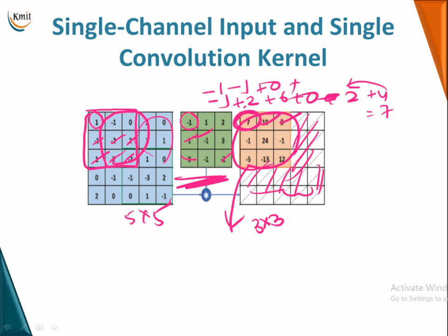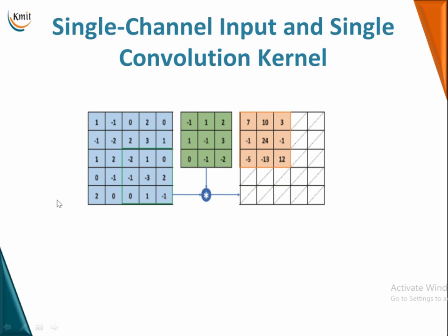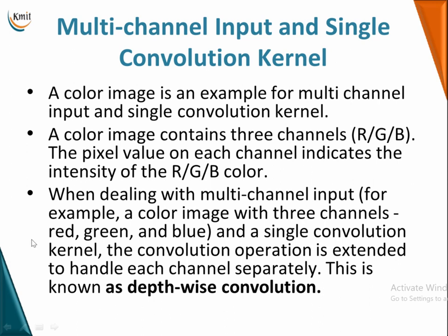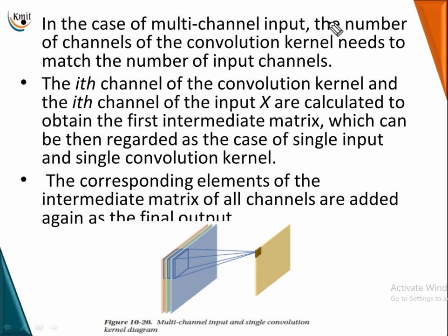That's the first type — single channel input and single convolution kernel — which is what you've seen so far. The next type, a little more complicated, is multi-channel input and a single convolution kernel. A brilliant example is a color image, which has three primary colors — red, green, and blue. The pixel values on each channel add up to give the resulting color. The convolution operation extends to handle each channel separately — this is also known as depth-wise convolution.